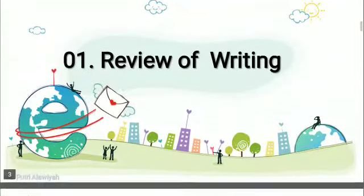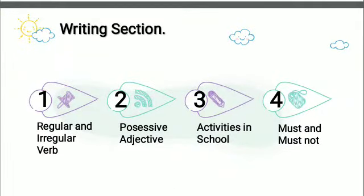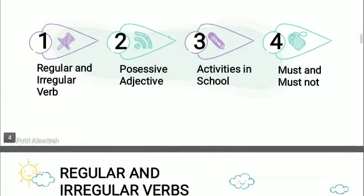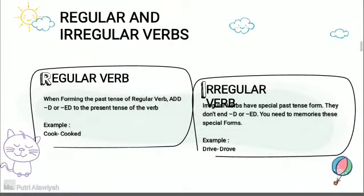Review of writing. On the writing session, there are 4 main materials that we are going to discuss: regular and irregular verbs, possessive adjective, the activity in school, and must and must not. In regular and irregular verbs, as you have been already discussed with your tutor before, regular verbs are kata kerja yang beraturan and irregular verbs are kata kerja yang tidak beraturan. When forming the past tense of the regular verb, you may add D or ED to the present tense of the verb. But irregular verbs have a special past tense form — they don't need to end with D or ED, so you need to memorize the special form by yourself.